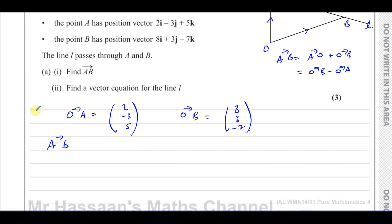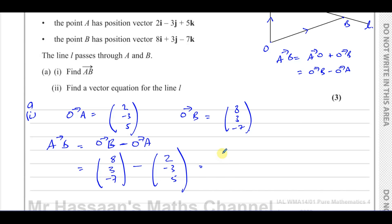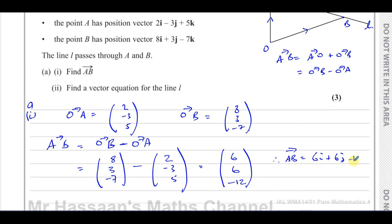So for part (a)(i), the vector from A to B equals OB minus OA. That's (8, 3, -7) minus (2, -3, 5). When you subtract: 8 minus 2 is 6, 3 minus minus 3 is also 6, and minus 7 minus 5 is negative 12. So the vector from A to B is 6i plus 6j minus 12k.